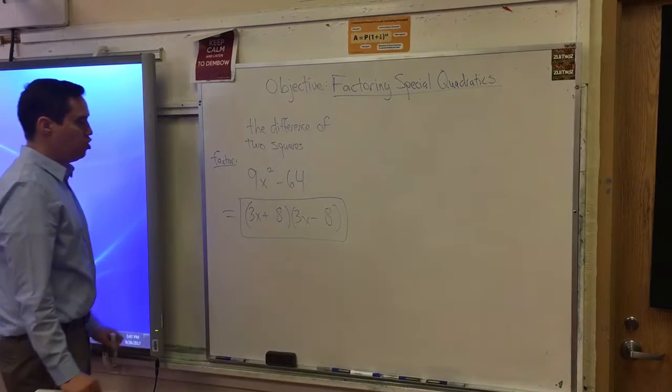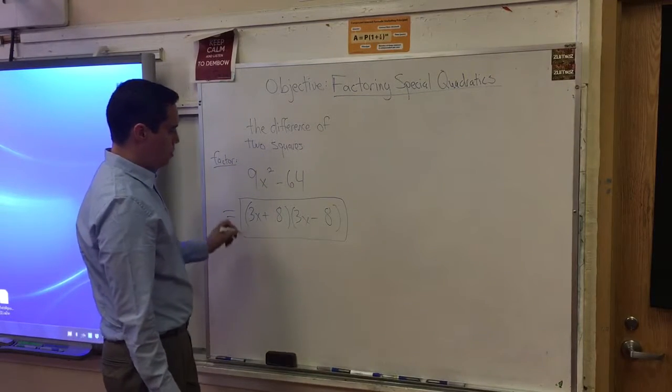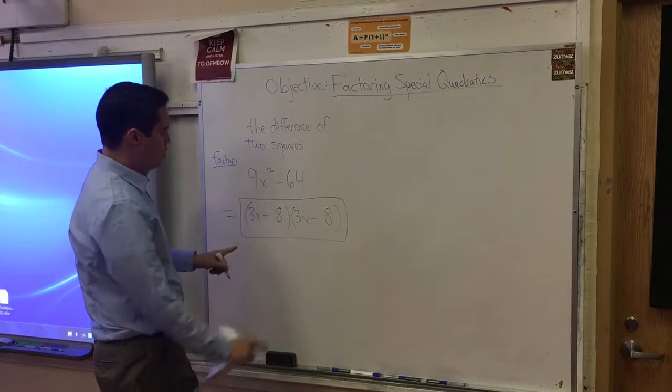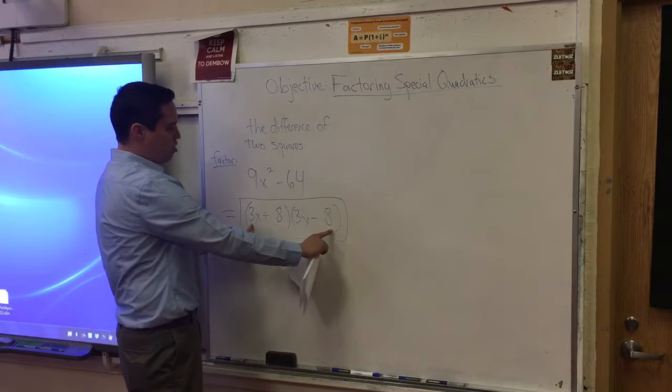We can check it. How would you check it? Well, you foil it out. That's the Algebra 1 stuff. So these two terms, 3x squared, the outer terms, 3x times 8, negative 24x.